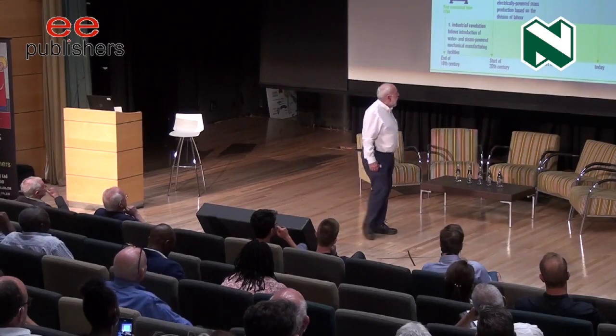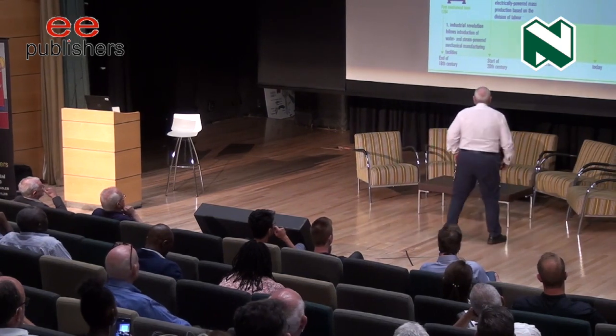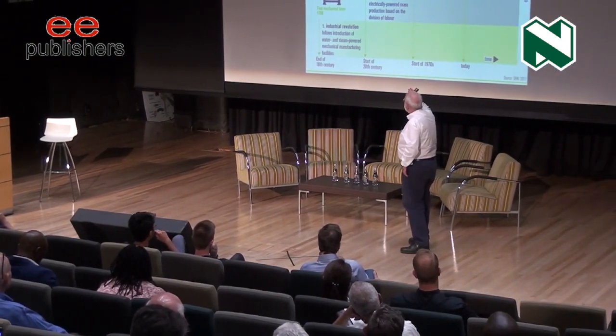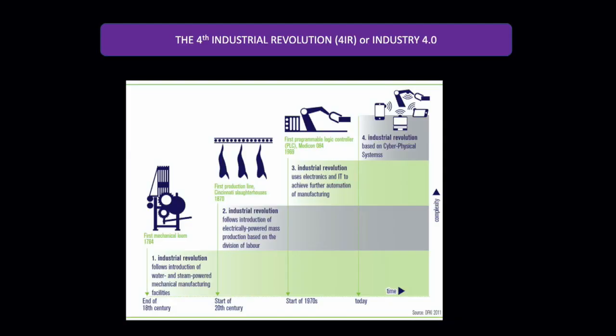Schwab looks at a number of previous industrial revolutions. We started with steam power and water power and the way that changed the weaving industry — that was the first industrial revolution. The second had to do with mass production and the introduction of electricity.